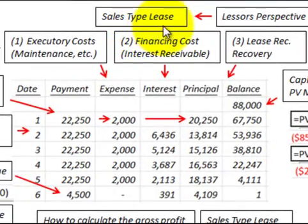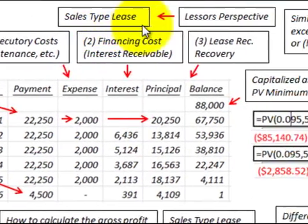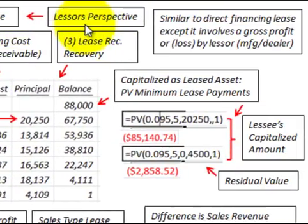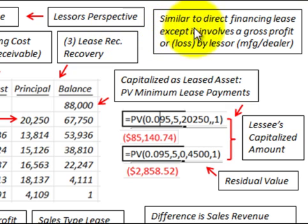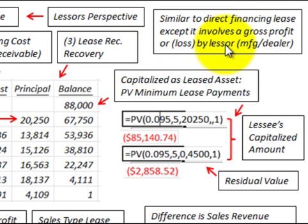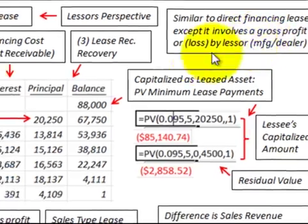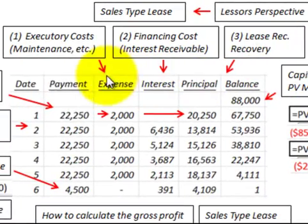Here we're going to be looking at a sales-type lease from the lessor's perspective. A sales-type lease is similar to a direct financing lease except that it involves a gross profit or loss by the lessor — the manufacturer or dealer.